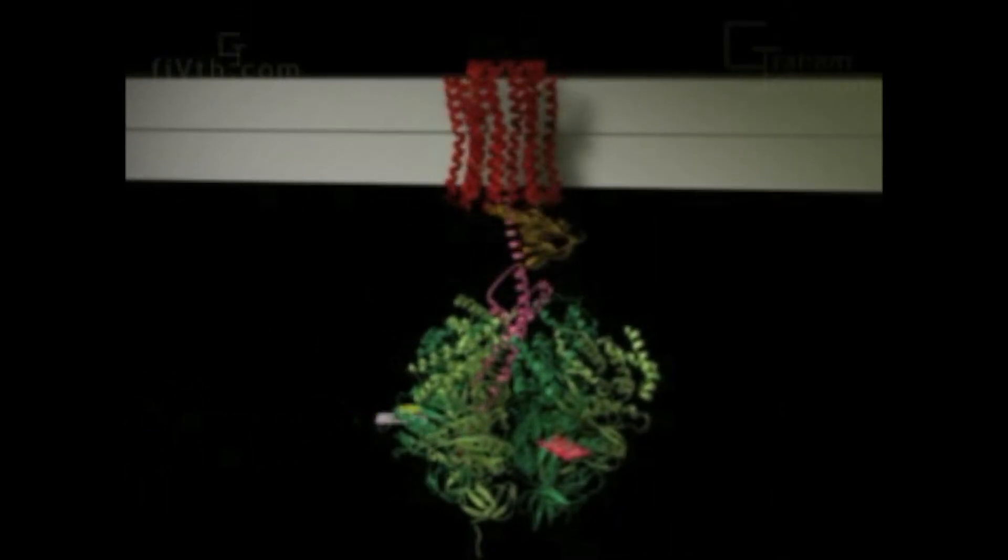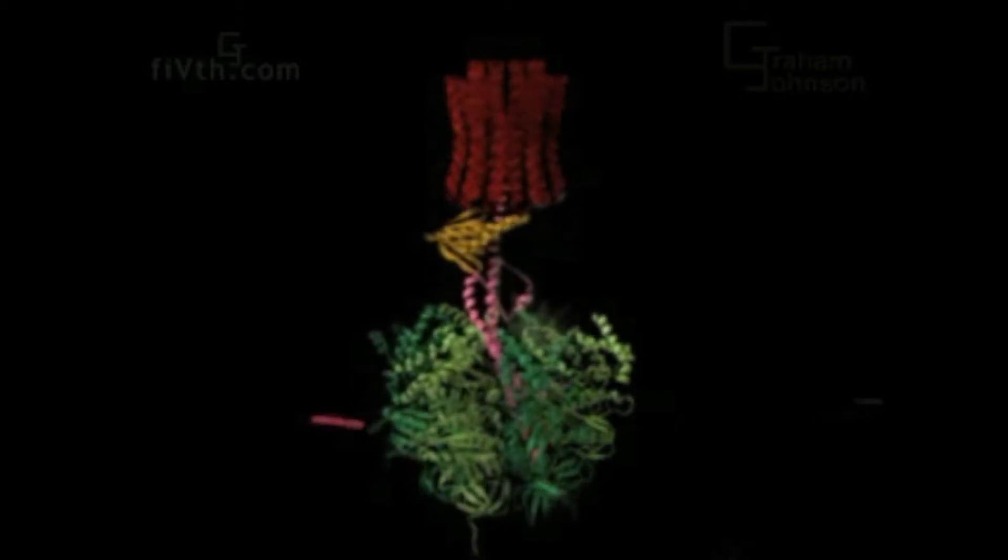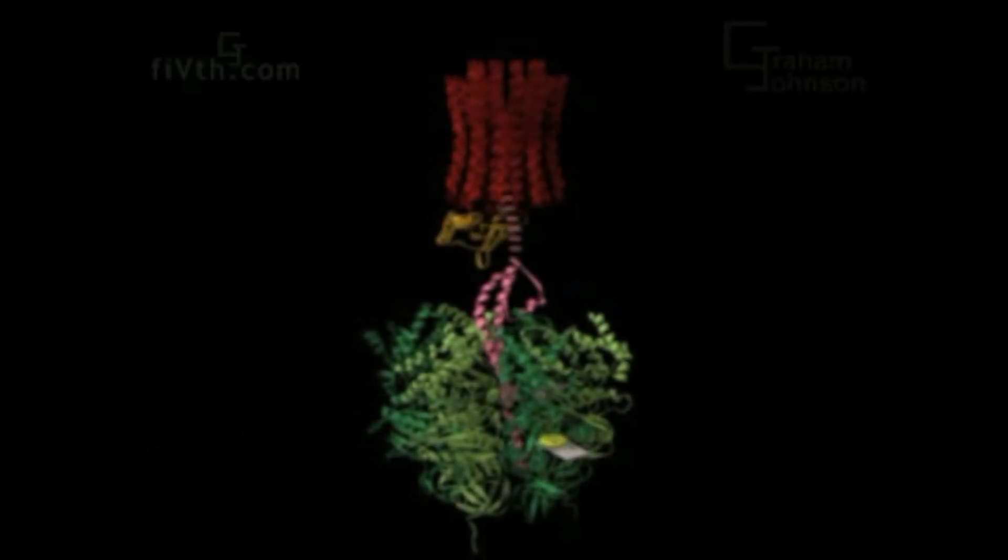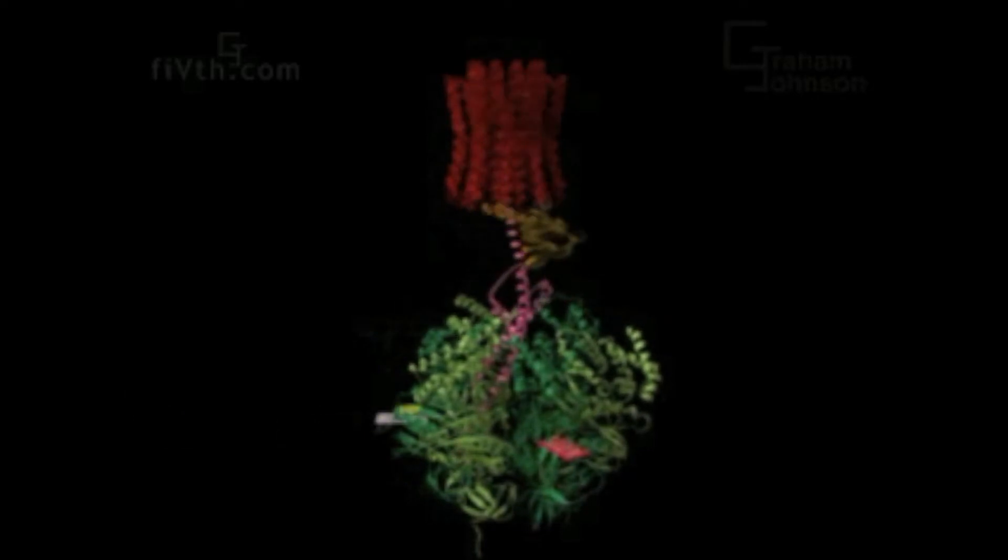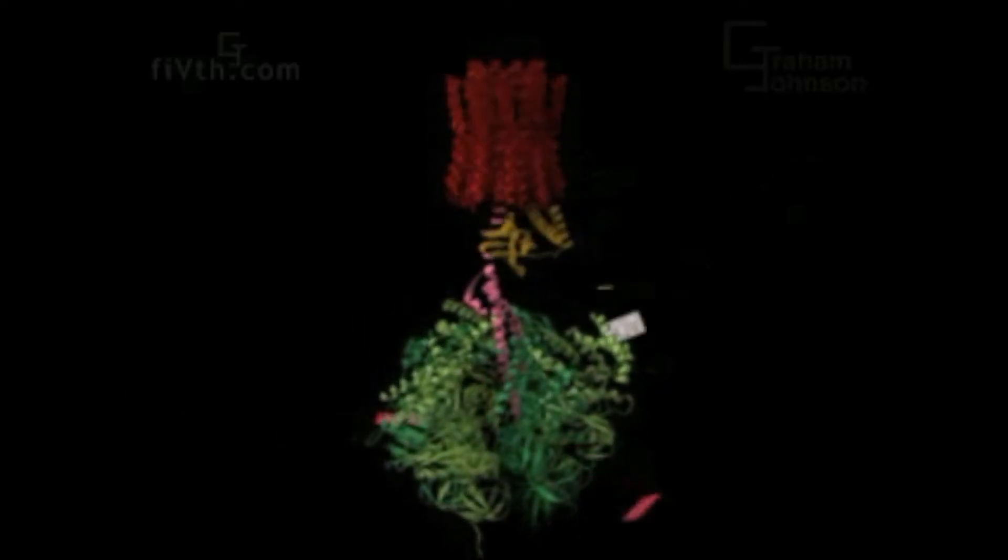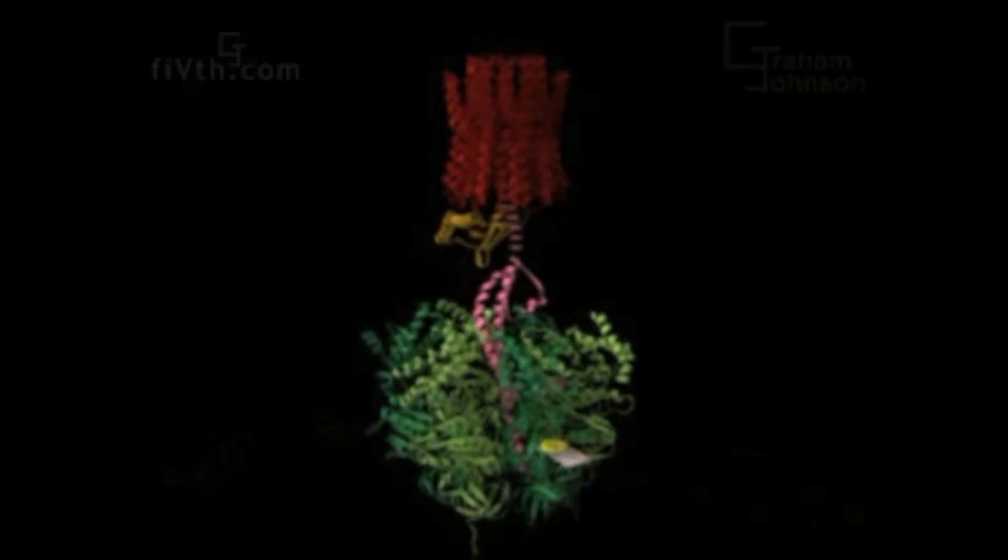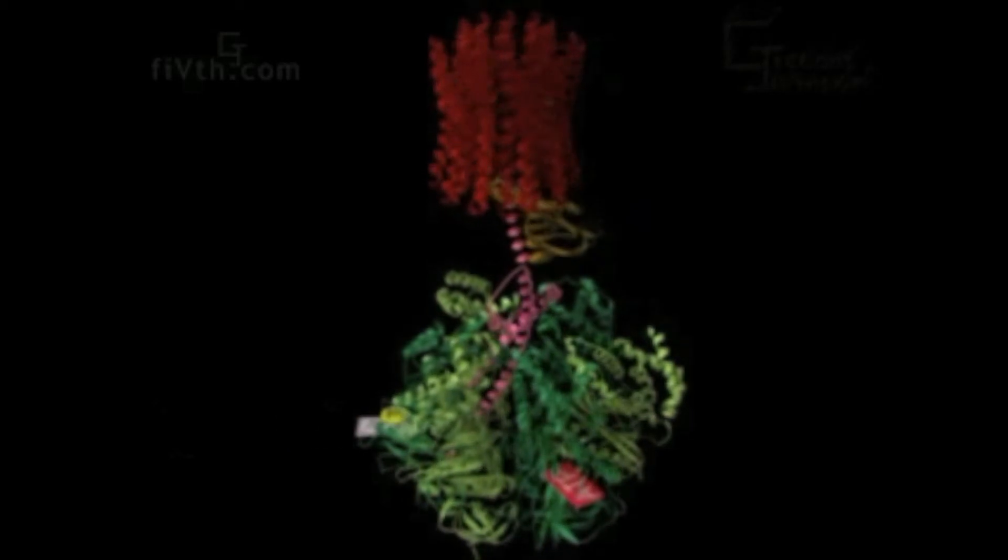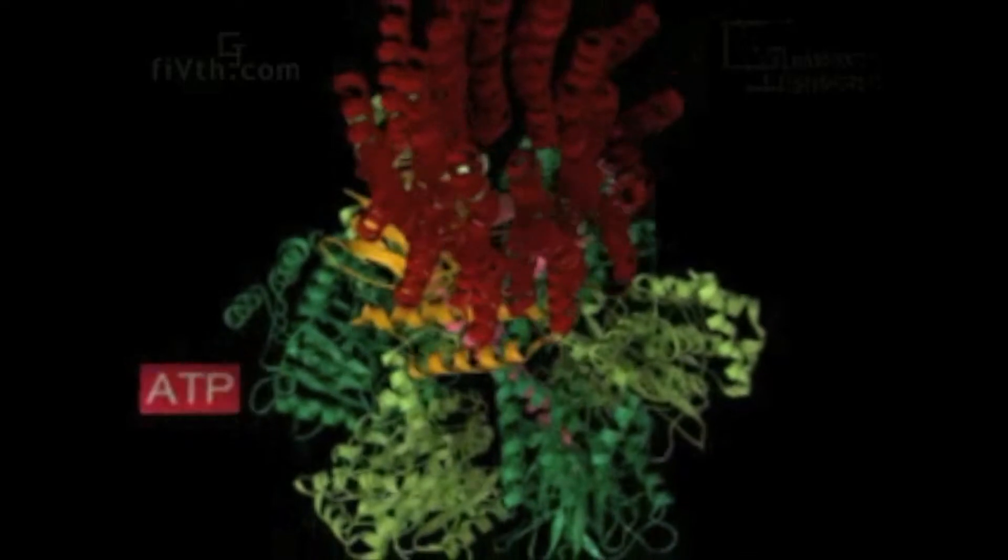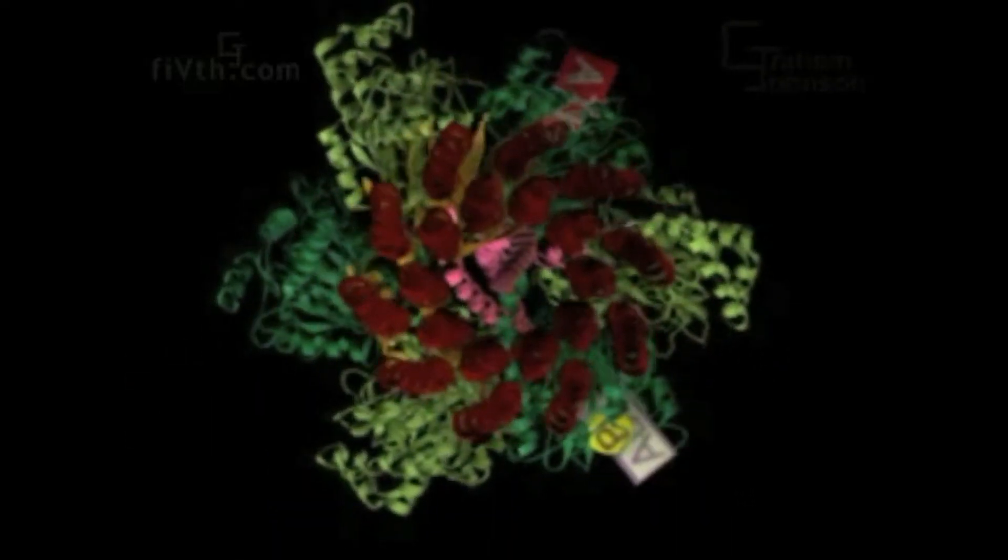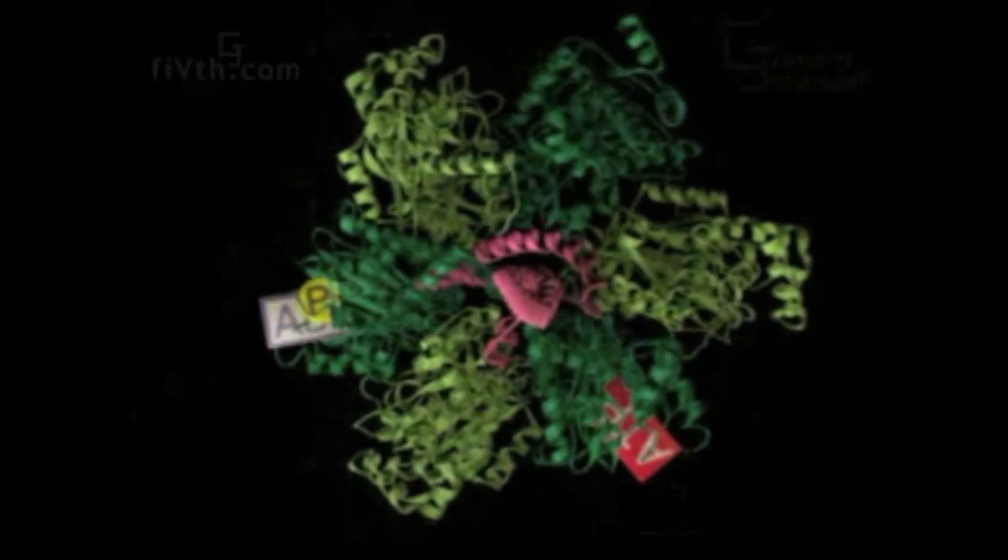The F1 ATPase portion of ATP synthase has been crystallized. Its molecular structure shows that the position of the central shaft influences the conformation and arrangement of the surrounding subunits.